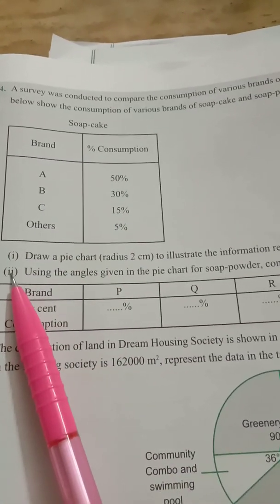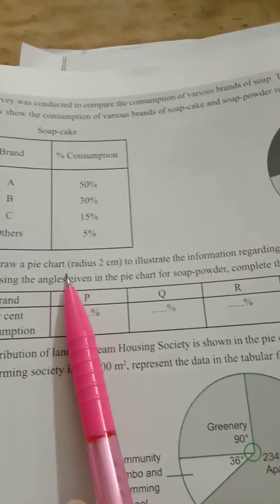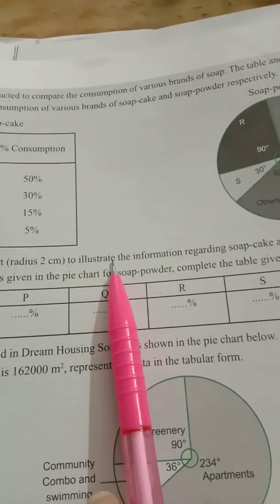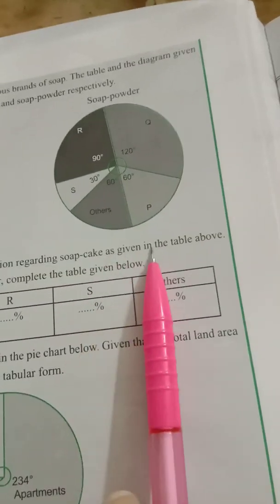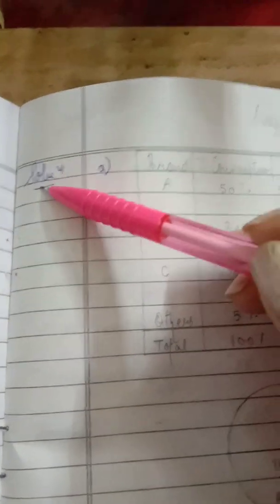Let's start with part 1 only. Draw a pie chart of radius 2 centimeters and illustrate the information regarding the soap cake as given in the table above. So we'll start fourth question, we'll start with first part or part A.